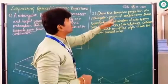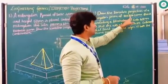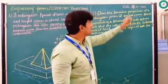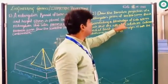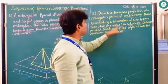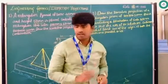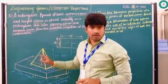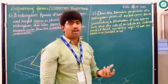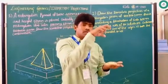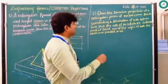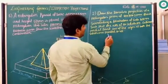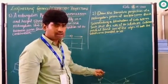Coming to the next question: draw the isometric projection of a rectangular prism of 60mm × 80mm × 20mm thick surrounding a tetrahedron of sides 40mm, such that the axes of the solids are collinear — meaning the tetrahedron is centrally placed. In this case we have a rectangular slab upon which a tetrahedron is placed, with the condition that at least one edge of both solids is parallel to VP.